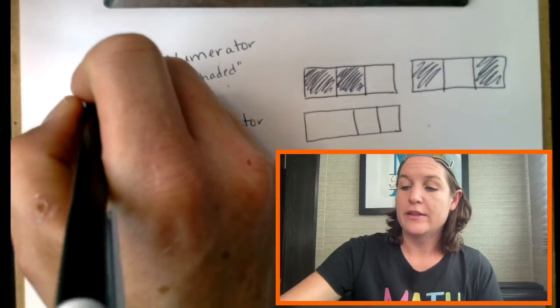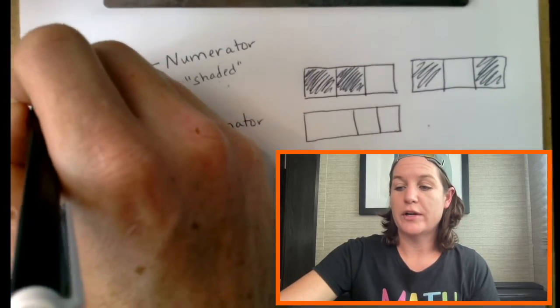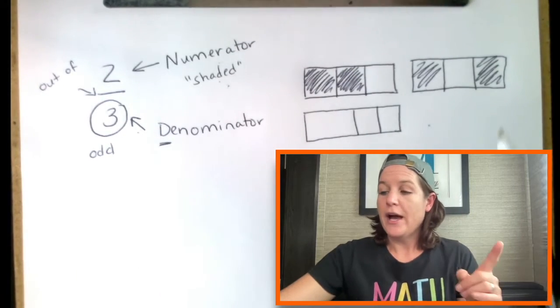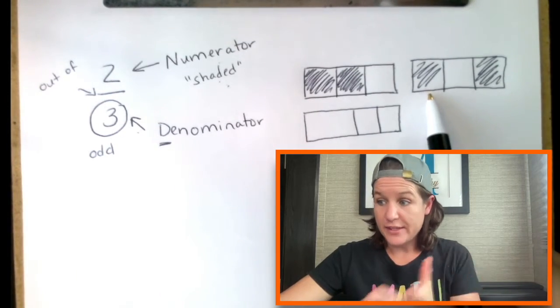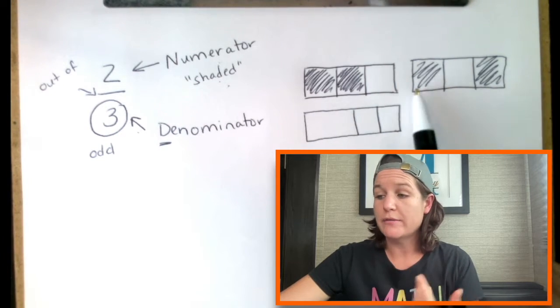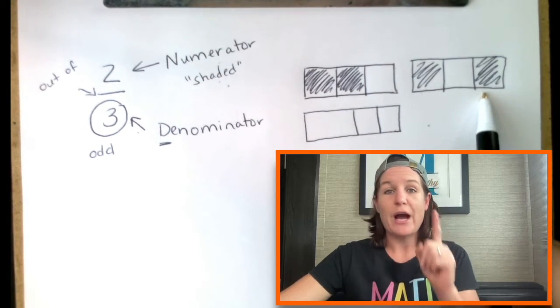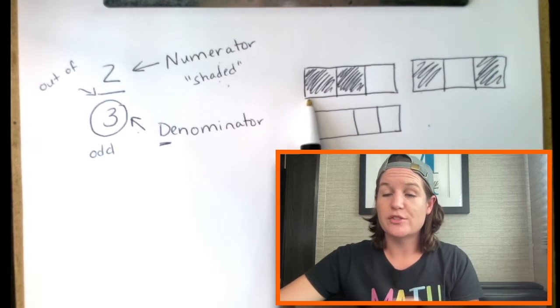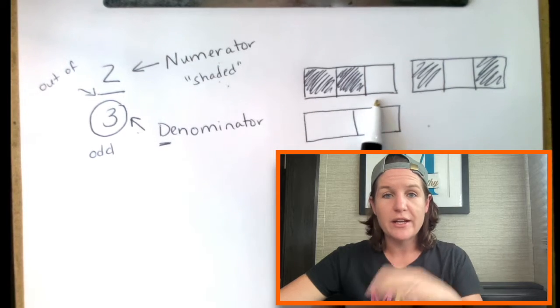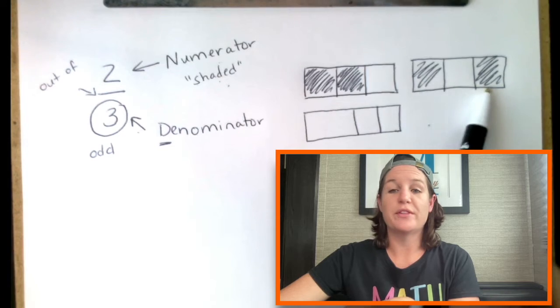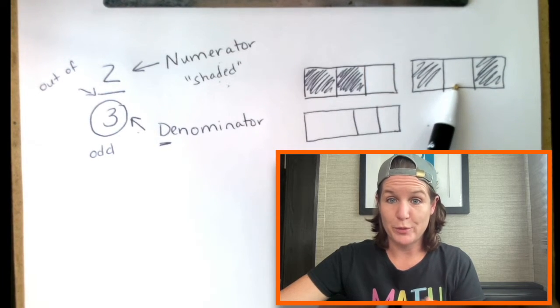Because we have two parts shaded out of the three, which, by the way, this fraction bar stands for out of as well. And the answer is, yes, this right here does represent two-thirds because we've shaded in two out of the three total parts. However, coming up, we will be comparing fractions. So, I always teach students, just like you read from left to right, get in the habit of modeling them when you're modeling them from left to right, but know that this is also a possibility too.